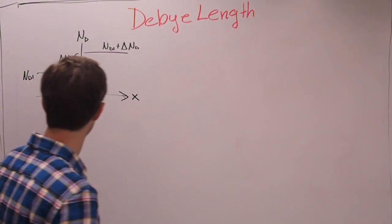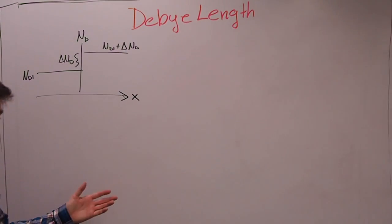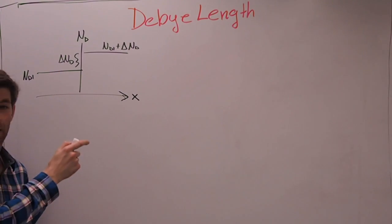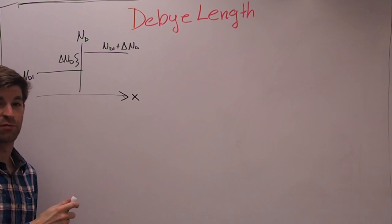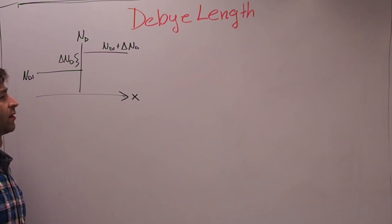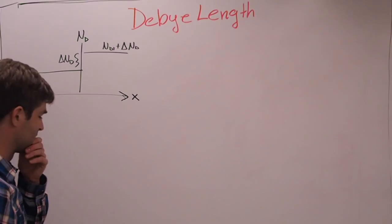So we're going to start with some semiconductor that is doped with some ND1. And at some point X, it goes into this abrupt change of doping to ND1 plus delta ND.